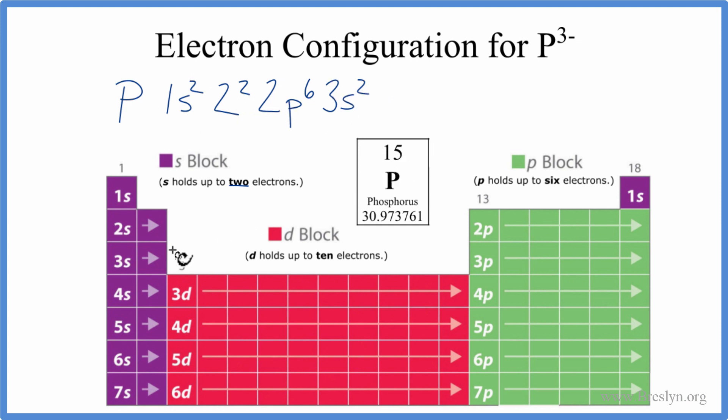We need 15. So when we go to the 3p, even though it can hold up to six, we're only going to put three in there. So all these numbers add up to 15, the number of electrons for the neutral atom, phosphorus.